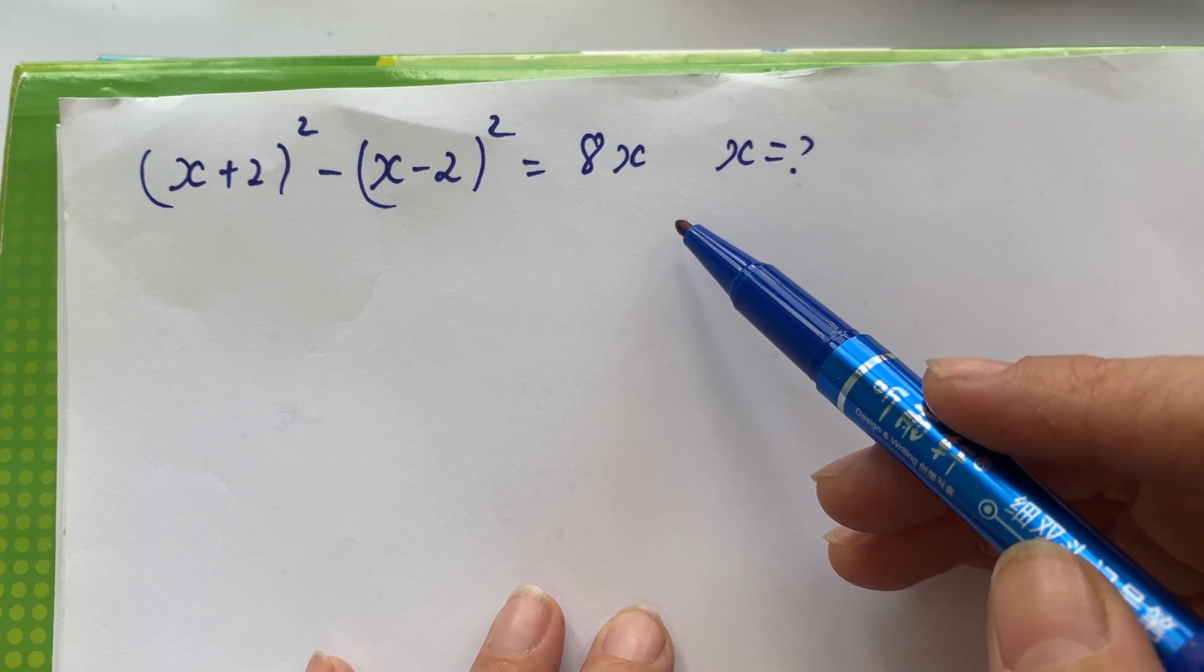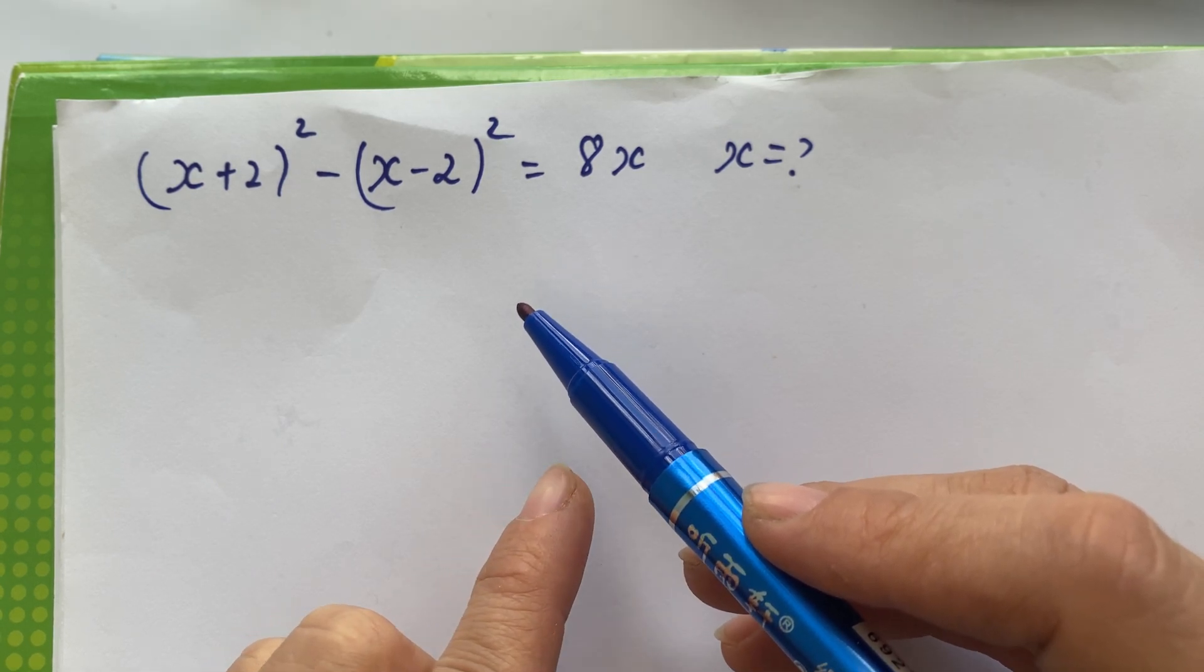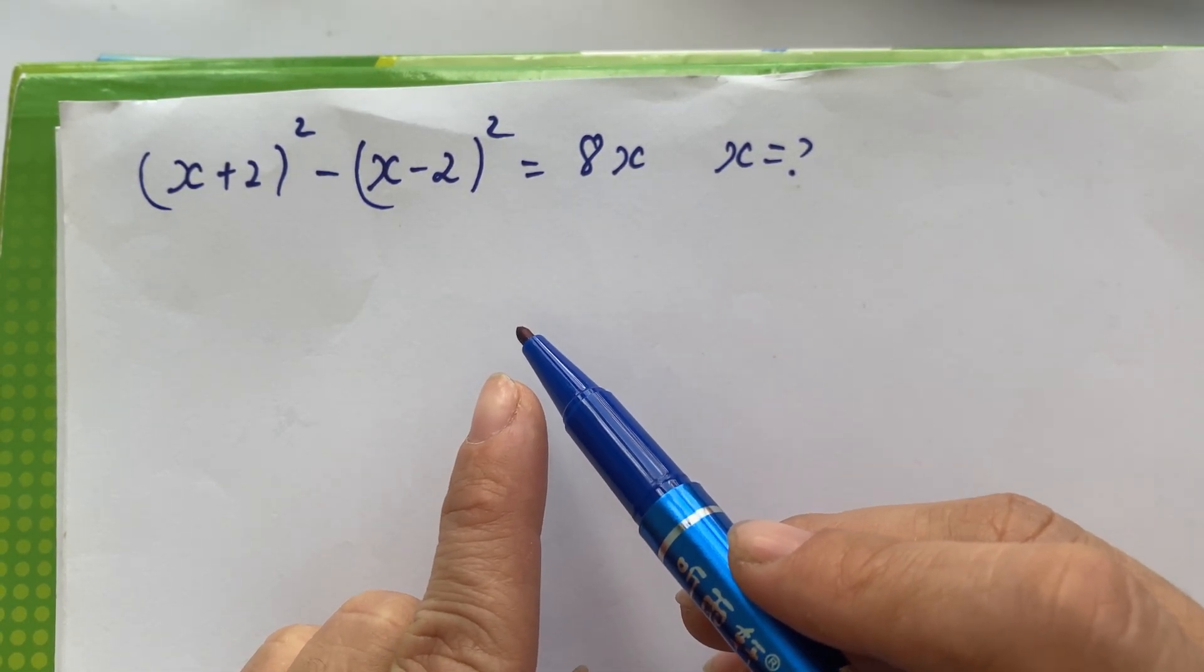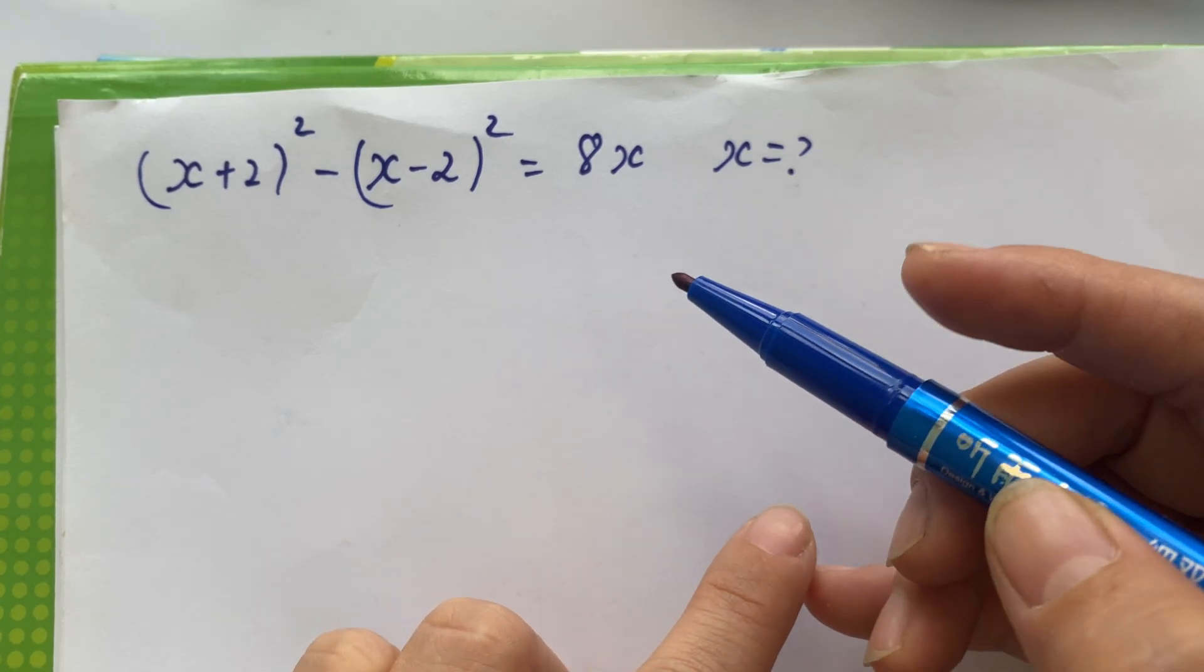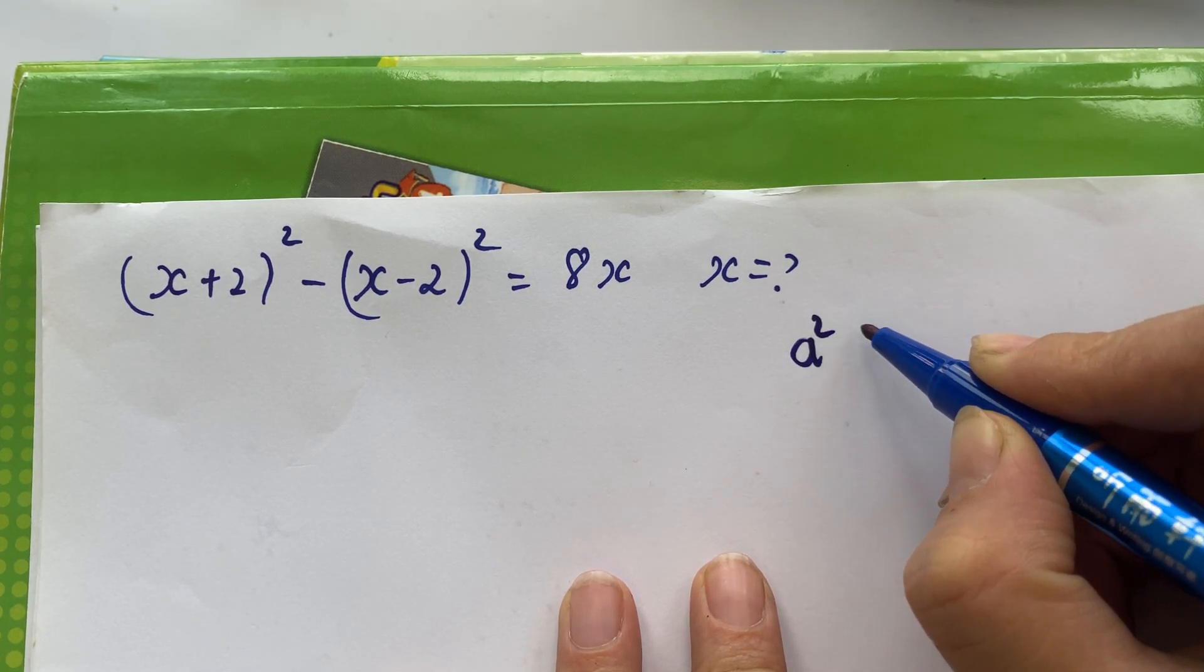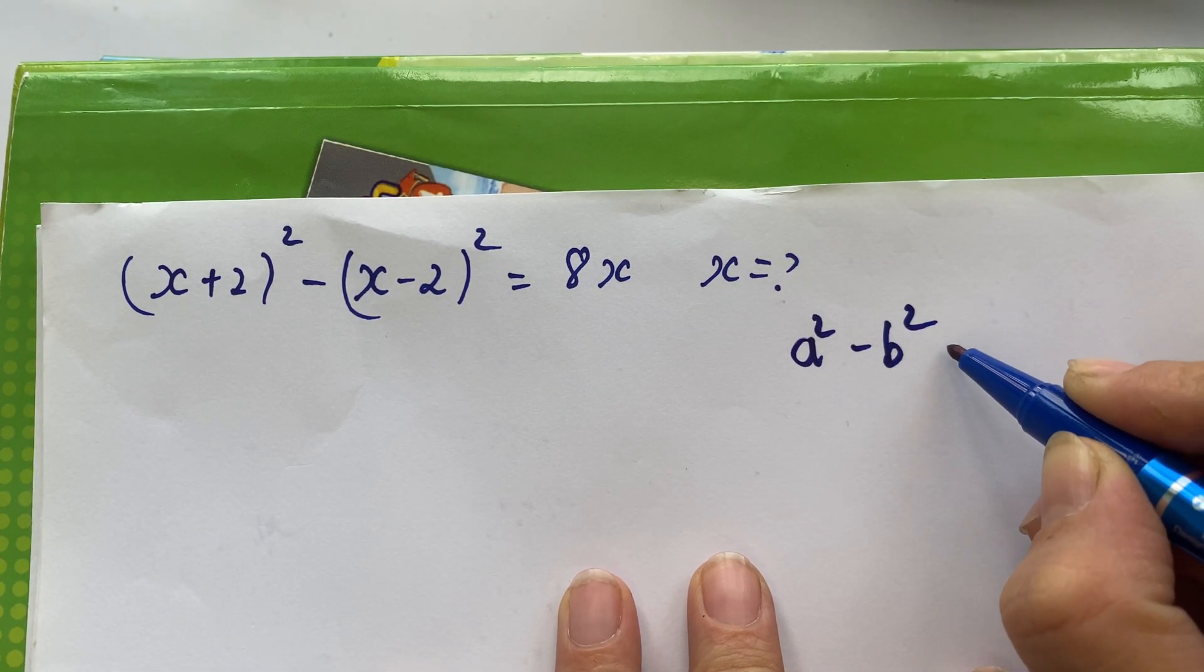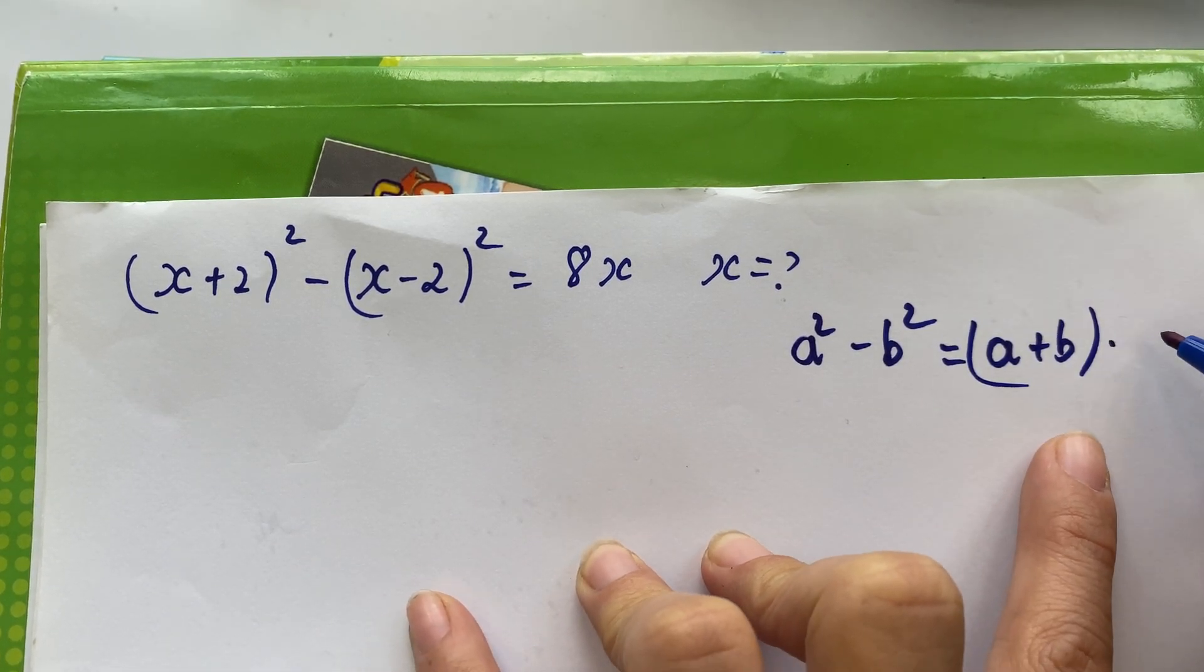First, you can see that in this case we have to use a basic algebraic identity. We use the difference of two squares: a² minus b² equals (a+b) times (a-b).